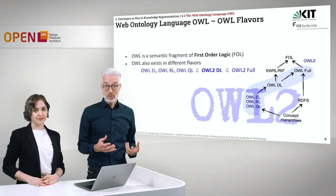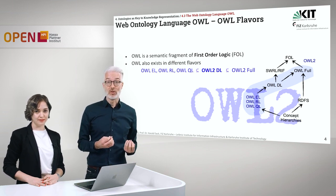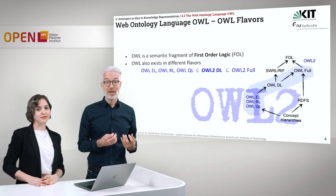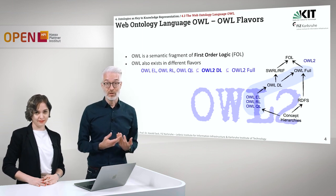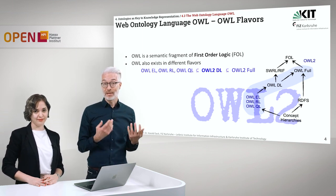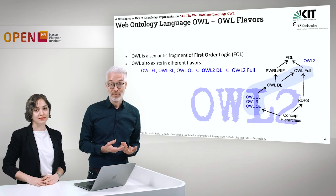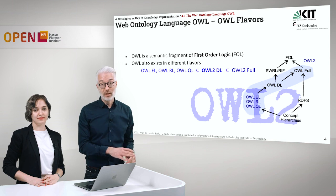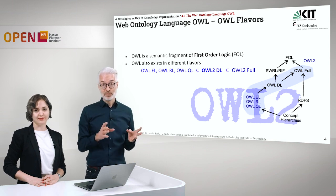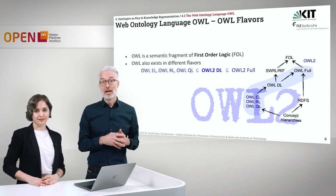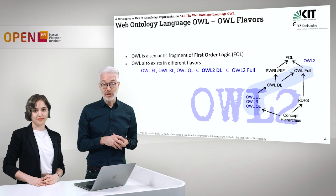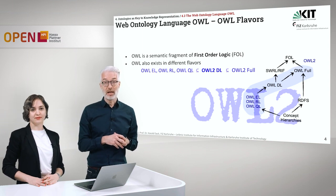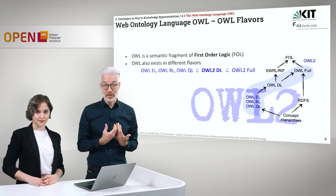OWL is a description logic, which means it's a semantic fragment of first-order logic, and it exists in different flavors. We have OWL EL, RL, and QL, which are simply subsets of the main OWL language that we will be talking about now, which is OWL2DL — description logic.